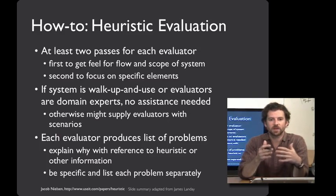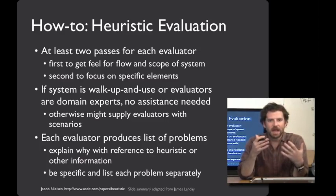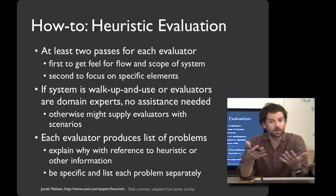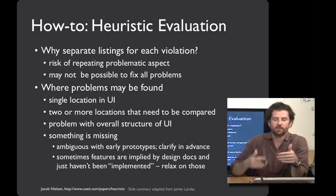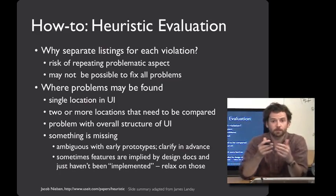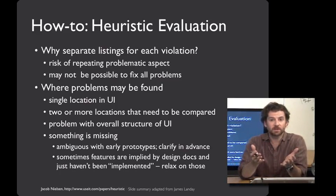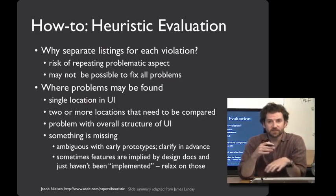When your evaluators are walking through your interface, it's important to produce a list of very specific problems and explain those problems with regard to one of the design heuristics — you don't want people to just say 'I don't like it.' In order to maximally pre-chew these results for the design team, you'll want to list each problem separately so that they can be dealt with efficiently. Separate listings can also help you avoid listing the same repeated problem over and over again — if there's a repeated element on every single screen, you want to list it once so it can be fixed once.